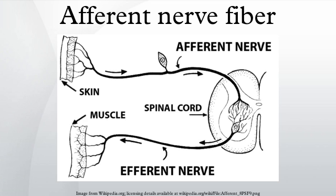Just outside the spinal cord, thousands of afferent neuronal cell bodies are aggregated in a swelling in the dorsal root known as the dorsal root ganglion. Afferent neuron somata are located in the peripheral nervous system, and the axons of these cells travel from ganglion to ganglion and lead back to the spinal cord. The majority of these are unipolar neurons in that they have a single axon leaving the cell body, sent towards the sensory organ.